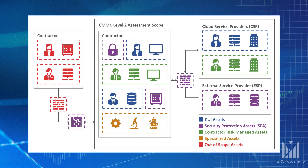As a reminder, the CMMC Assessment Scope includes all assets in the contractor's environment that will have the security requirements applied to them, be assessed, and/or documented. For CMMC Level 2, assets that process, store, or transmit controlled and classified information, and assets that provide security protections for those CUI assets, must have the security controls applied to them.